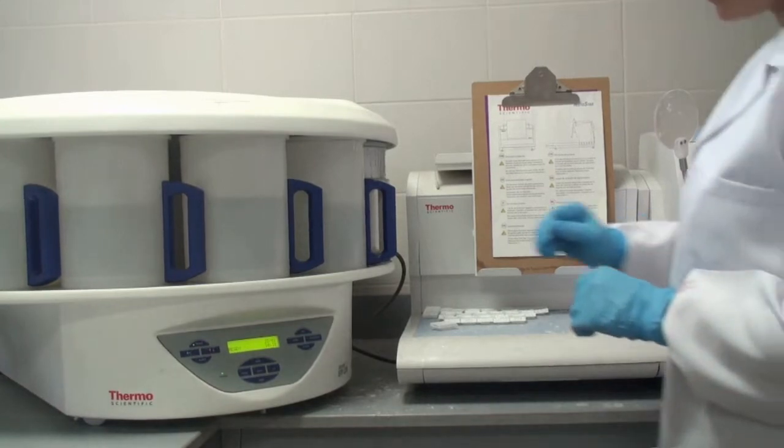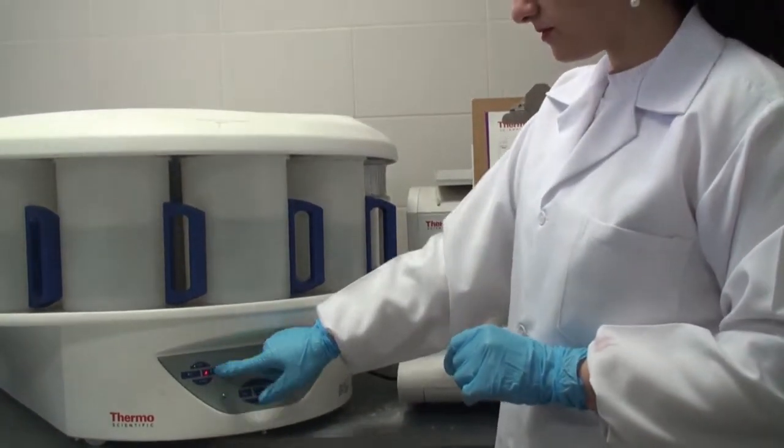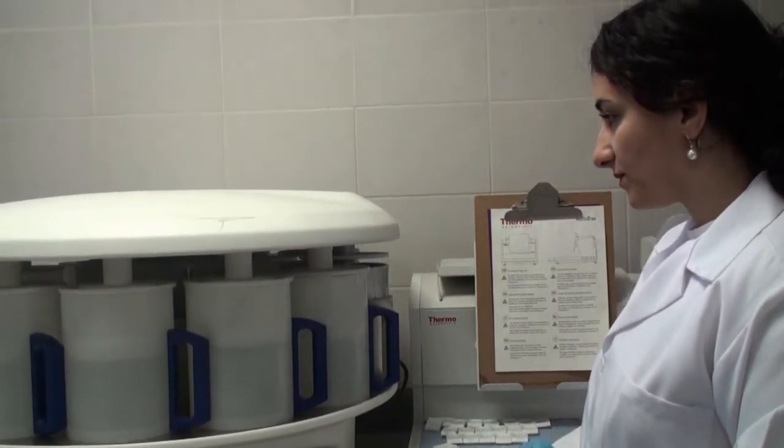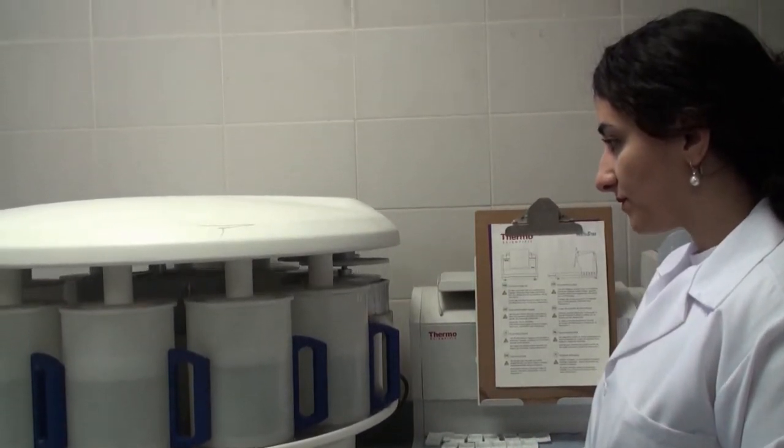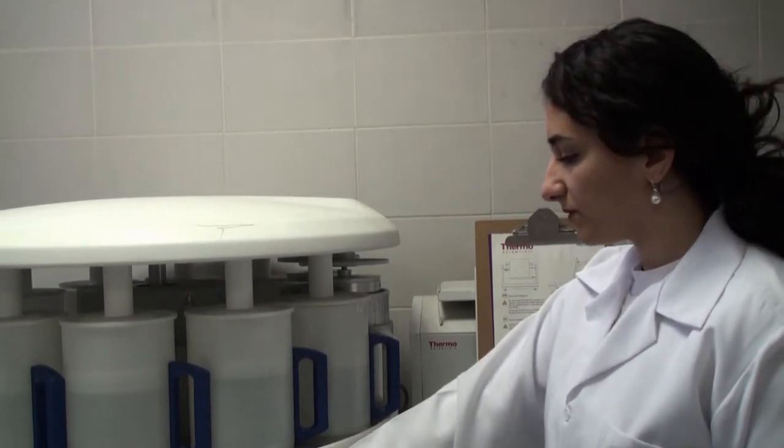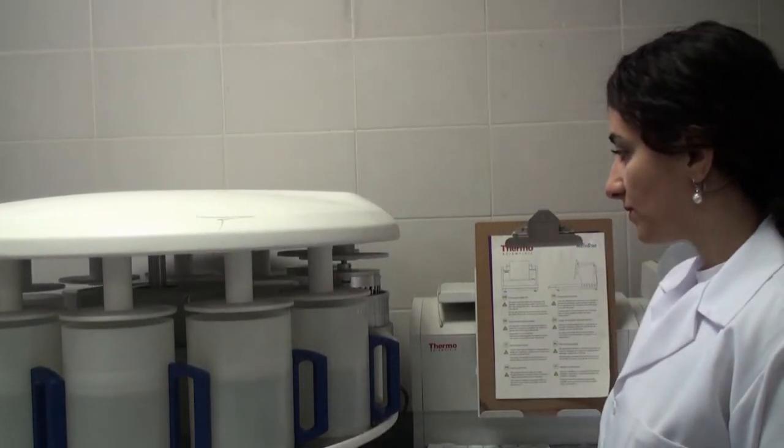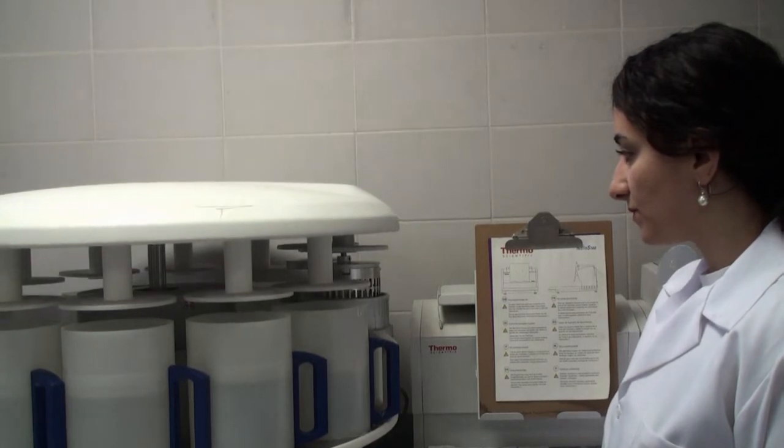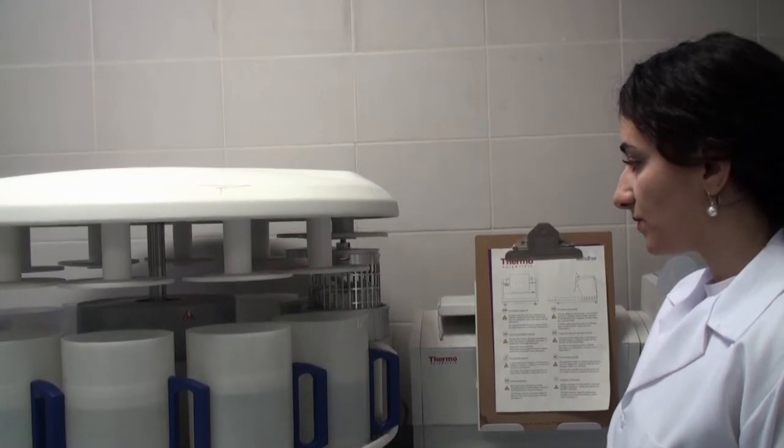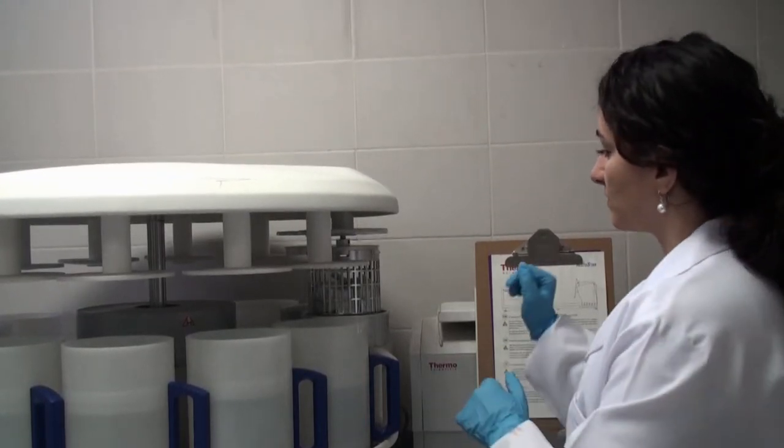After the end of the processing, we will open our automated processing machine and remove our cassette from the molten wax. Now we have infiltrated our sample. The next step would be embedding our sample. So for that, we will remove the cassette and put it on the embedding station.